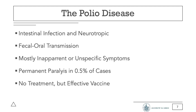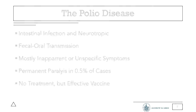There is no treatment for polio. However, there are two vaccines which have been in widespread use for decades: the inactivated polio vaccine and the oral polio vaccine, which contains live virus that has been attenuated. There are three serotypes of polio, and both vaccines are trivalent and protect against poliomyelitis for all three.